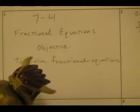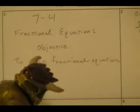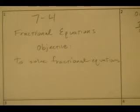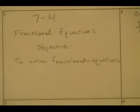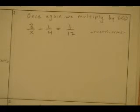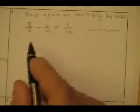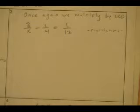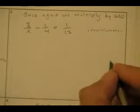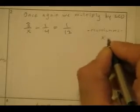Fractional equations again. Objective: to solve fractional equations. We're going to multiply by the LCD — make sure you're careful of your restrictions. When you solve these, you always have to double-check the restrictions. Here, what can x not be? It cannot be zero, because if x was zero this would be three over zero, and that's nonsense. So x, 4, and 12 all go into 12x, so 12x is my LCD. My restriction is x cannot equal zero.